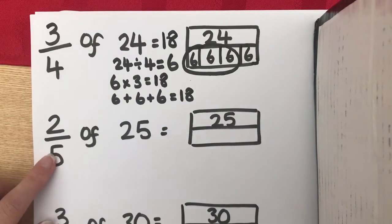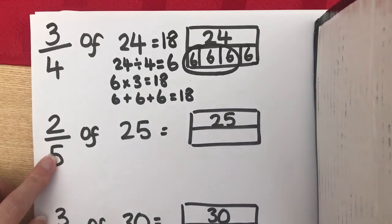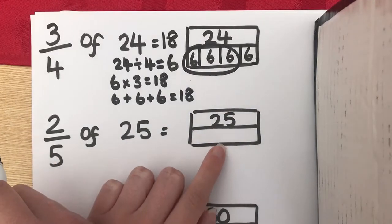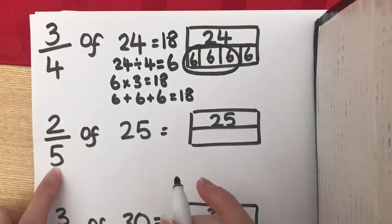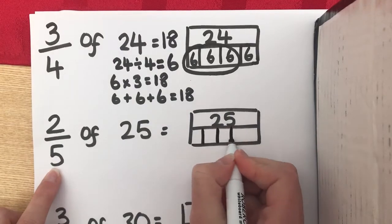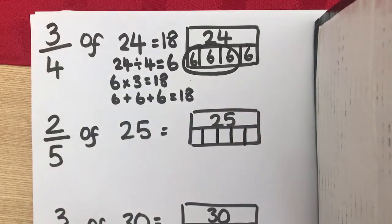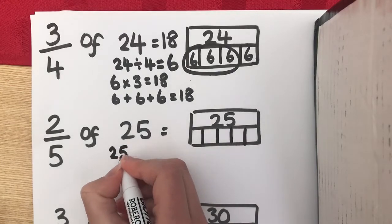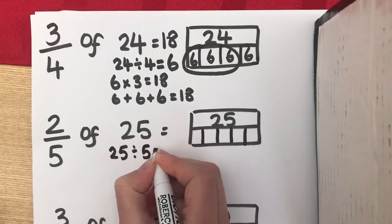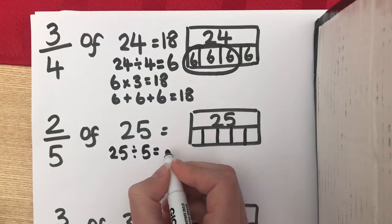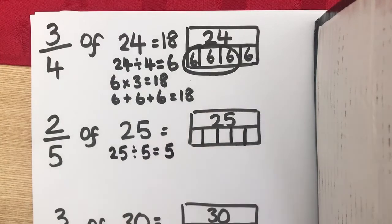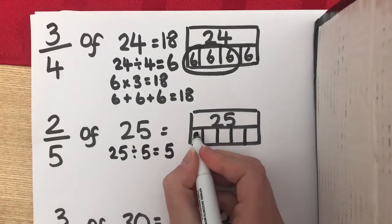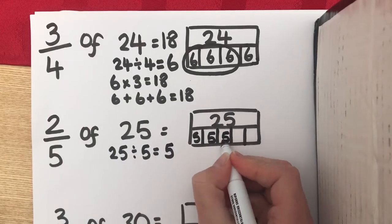We're going to do exactly the same thing for this one here. So, 25 is our whole. This time, we're going to split the bottom into 5 because our denominator is 5 this time. And to work out what each fifth is worth, we are going to divide 25 by 5. And using your 5 times table, you should know that there are 5 fives in 25. So, each one of these is worth 5.